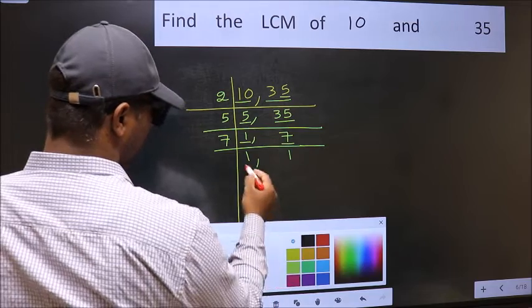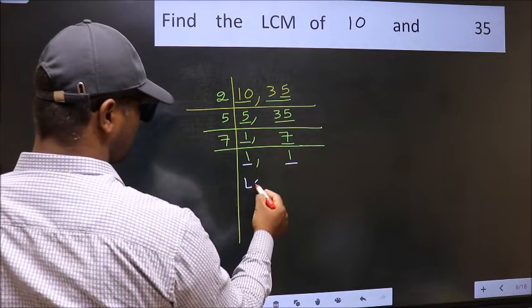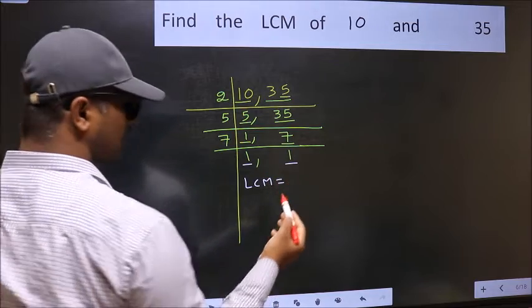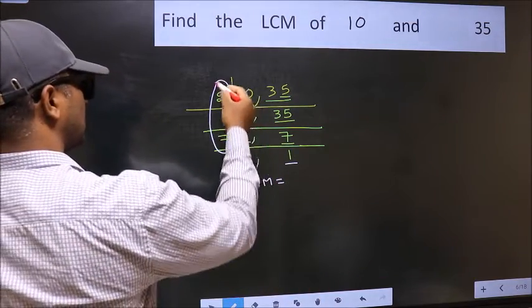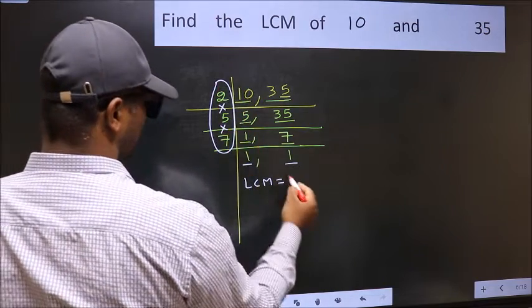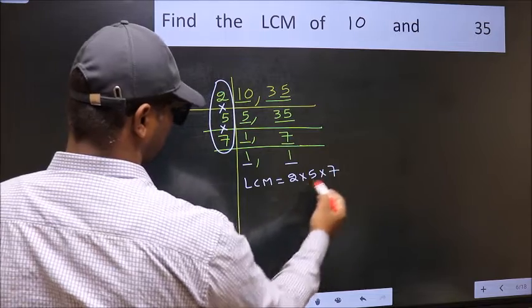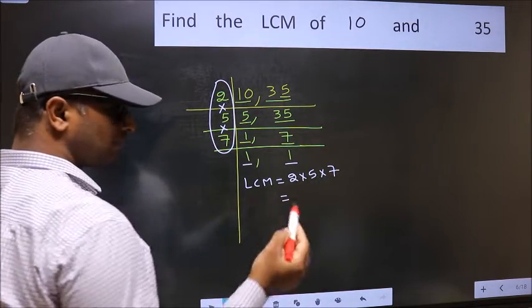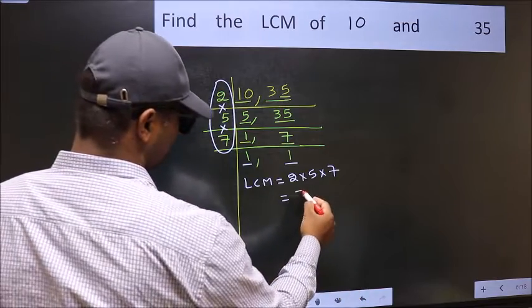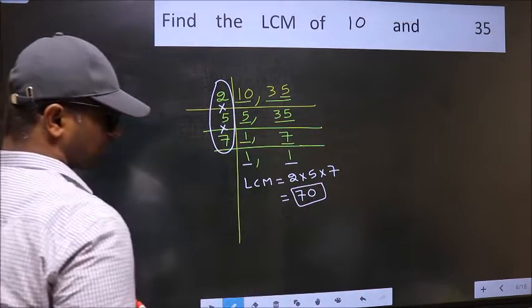We got 1 in both places. So our LCM is the product of these numbers. That is 2 times 5 times 7. When we multiply these numbers, we get 70. Thank you. This is our LCM.